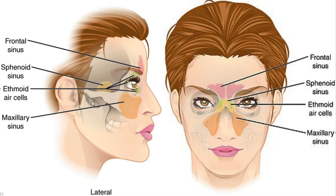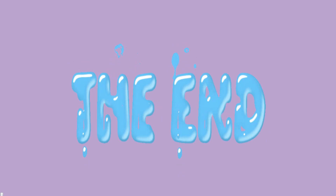To summarize innervation: the maxillary sinus is innervated by the maxillary nerve. The frontal sinus is innervated by the ophthalmic nerve, since it's located just above your eyes. The ethmoidal sinus is innervated by the ethmoidal nerve. And the sphenoidal sinus, located directly behind your eyes, is innervated by both the ophthalmic and maxillary nerves. Thank you all for watching — if you enjoyed the video, please press the thumbs up button and don't forget to subscribe for more videos.